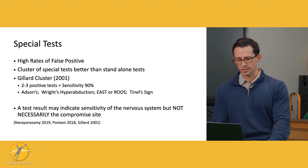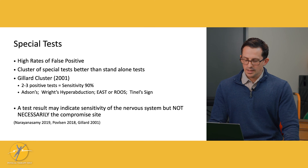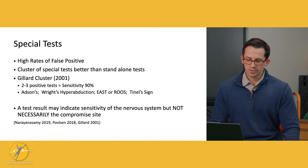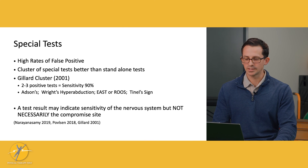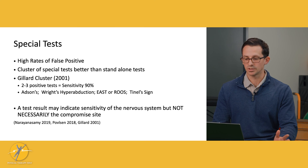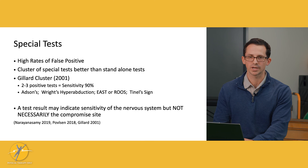The Gillard cluster, research back in 2001, found that two to three positive tests will have a better sensitivity rate of 90%. Just a reminder that a positive test result means basically there's an increased sensitivity of the nervous system — it does not tell us necessarily where the compromised site is.